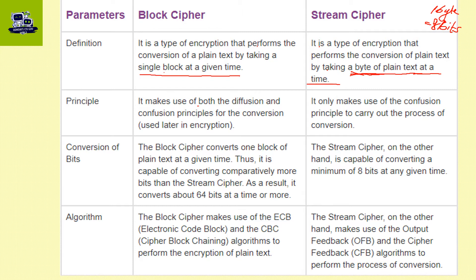Regarding the principle: block cipher makes use of both diffusion and confusion principles. Stream cipher, on the other hand, converts using only the confusion method.